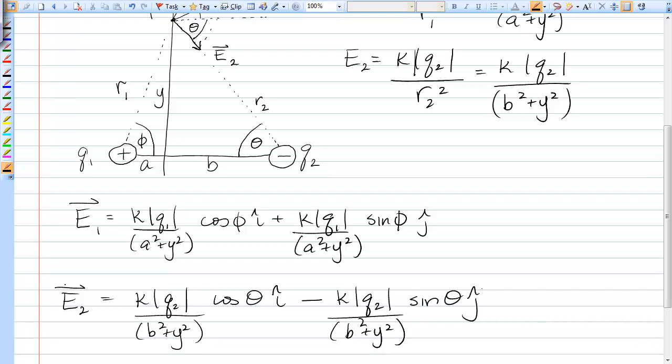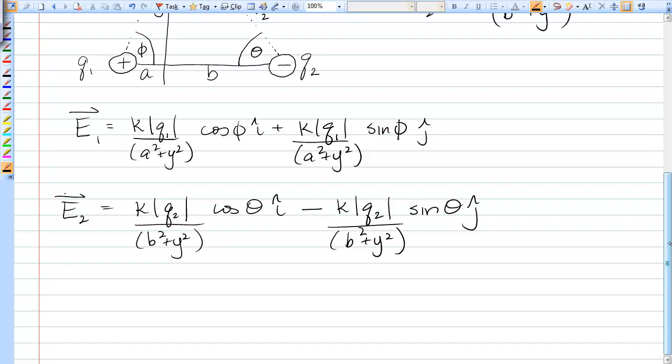Okay. Now, as I said earlier, we cannot leave theta and phi in our answer, so let's get those in terms of the variables that we're given. So we can see from the triangle that the cosine of phi is equal to A over R1, which is A over the root of A squared plus Y squared. Similarly, sine phi is equal to Y over R1, so it's Y over the root of A squared plus Y squared.